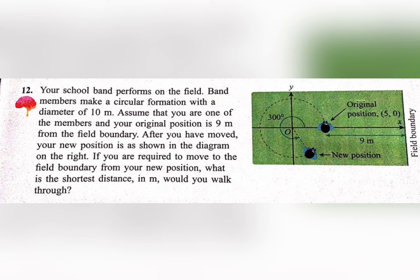On question 12, it states that your school band performs on the field. Band members make a circular formation with a diameter of 10 meters. Assume that you are one of the members, and your original position is 9 meters from the field boundary.